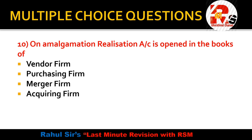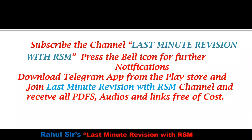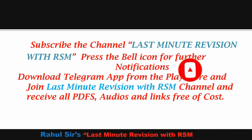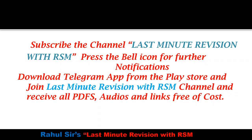The last question: On amalgamation, realization account is opened in the books of — vendor firm, purchasing firm, merger firm, or acquiring firm? Realization account is always opened in the old books, so the correct answer is vendor firm. Vendor means seller — it is opened in the selling firm's books, which is always the old company. That's it from this video. If you found it helpful, like and share it with friends, and subscribe to the channel — till then, as always, work harder, be smarter.